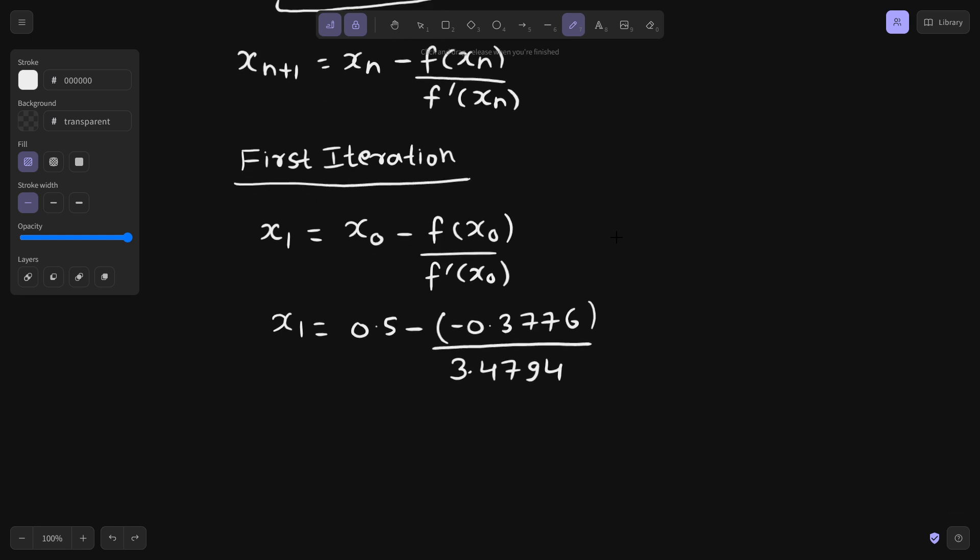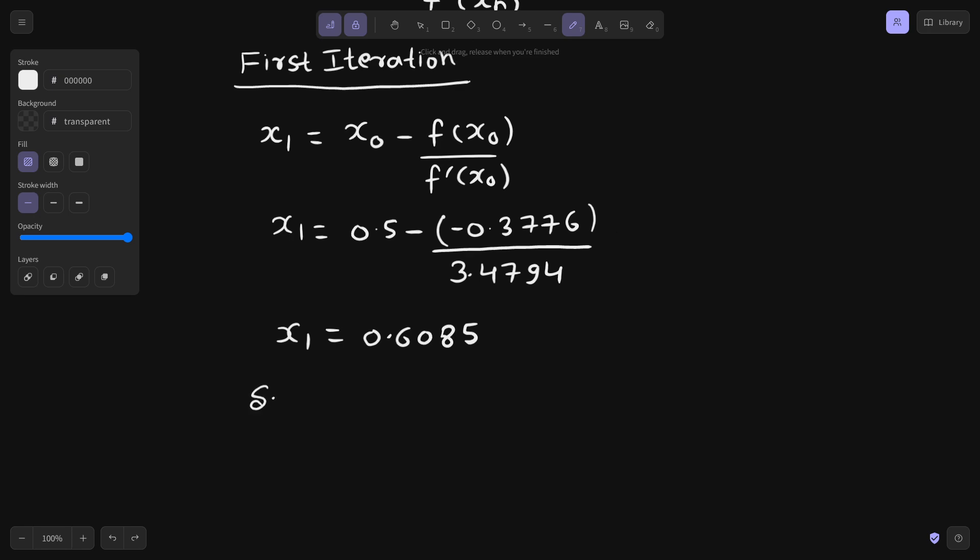Negative negative positive. x1 value will be, let us jump to the calculator, 0.5 plus 0.3776 divided by 3.4794. This is giving out the value as 0.6085. Let us go step further here to the second iteration.